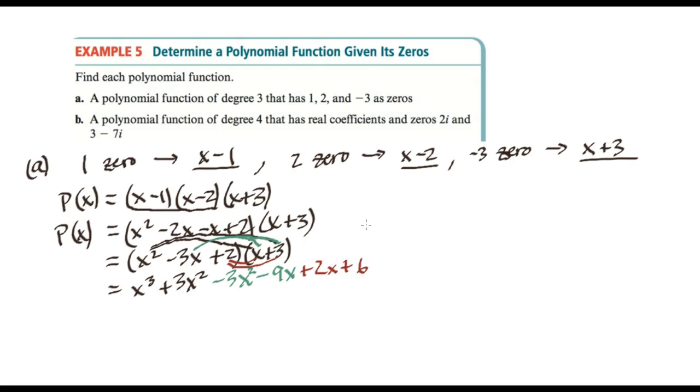And then we'll combine like terms to get our result. So P(x) is equal to x cubed. Nothing to combine. 3x squared minus 3x squared cancel out. And then negative 9x plus 2x is negative 7x, and then plus 6. And there's our result.